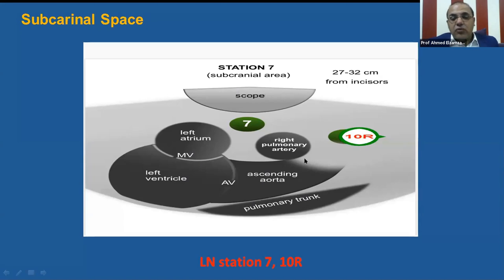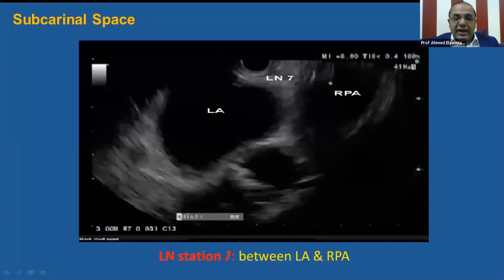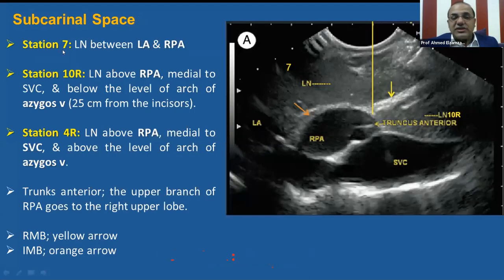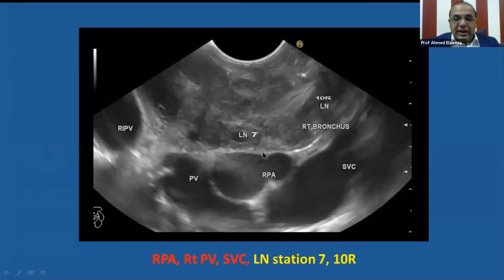When we withdraw the scope more and more, we can find lymph node station above the right pulmonary artery, medial to the superior vena cava — this is station 10R. Again, this is the left atrium, right pulmonary artery, and lymph node station 7 in between. So station 7 lymph node is between left atrium and right pulmonary artery, while station 10R is lymph node above the right pulmonary artery, medial to superior vena cava, below the level of arch of azygous vein. Station 4R is lymph node above the right pulmonary artery, medial to superior vena cava, but above the level of the arch of azygous vein. This is the right pulmonary artery, superior and inferior pulmonary veins, superior vena cava, and lymph node above the right pulmonary artery medial to superior vena cava — this is 10R.